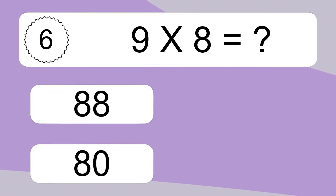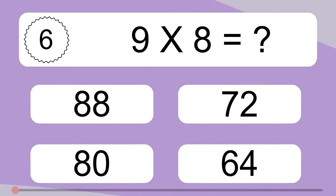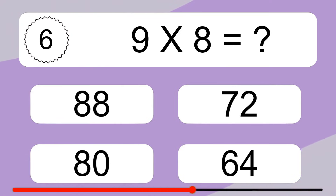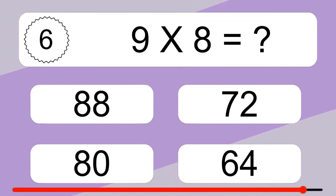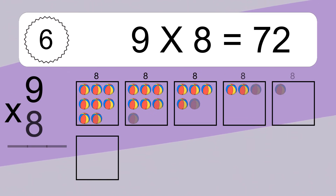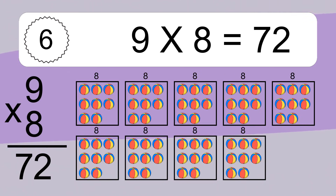9 times 8 equals what? 9 times 8 equals 72.